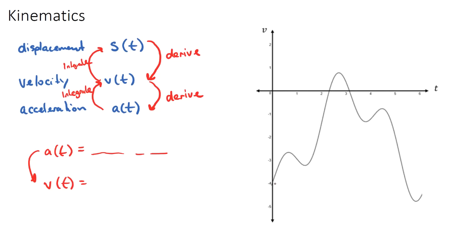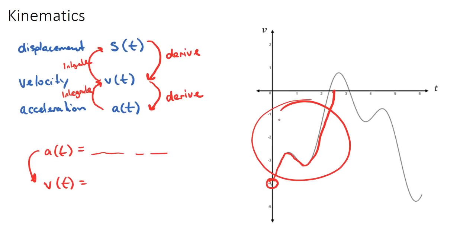At the very start, the velocity begins at negative four — let's assume meters per second. A negative velocity means the object has a speed of four meters per second but is traveling backwards, in the negative direction. Even though the curve dips and rises within the negative region, that doesn't mean the object is changing direction — it still has a negative velocity throughout, so it is still traveling backwards. Those fluctuations just mean it's accelerating and decelerating while still going backwards.